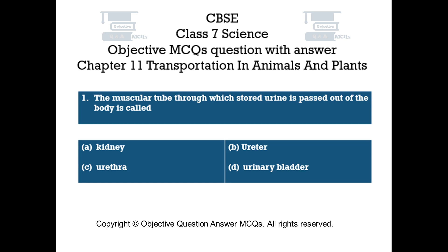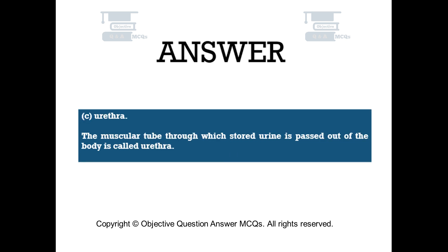The right answer is Option C: Urethra. The muscular tube through which stored urine is passed out of the body is called urethra.